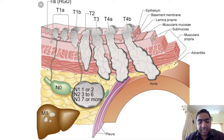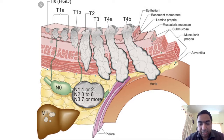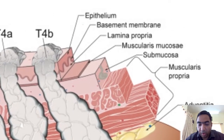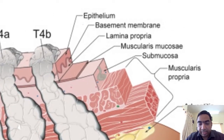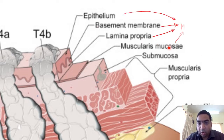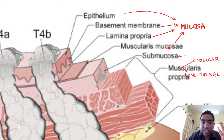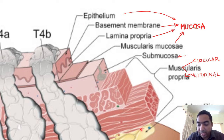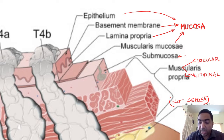Before understanding T staging, we need to understand the different layers of the esophagus. The layers are: epithelium, basement membrane, lamina propria, and muscularis mucosa — all comprising the mucosa — then submucosa, then muscularis propria which has an inner circular and outer longitudinal layer, and finally the adventitia. Notably, the esophagus has only adventitia and no serosa.